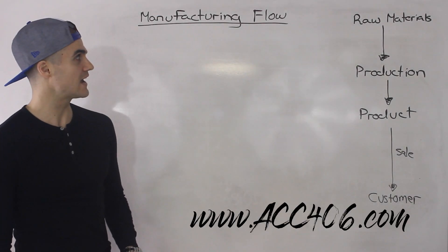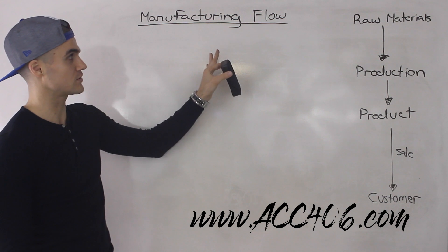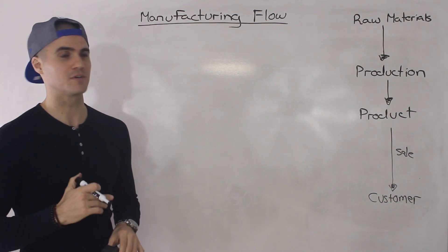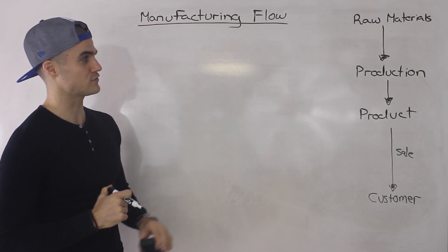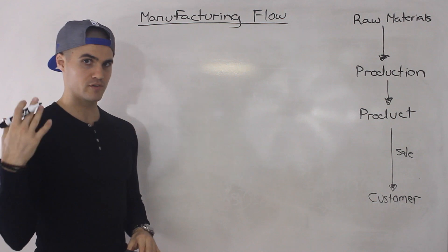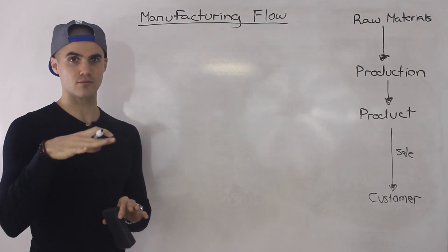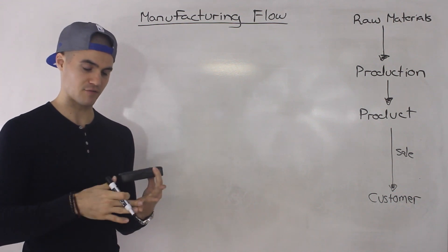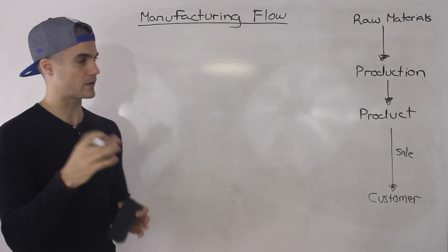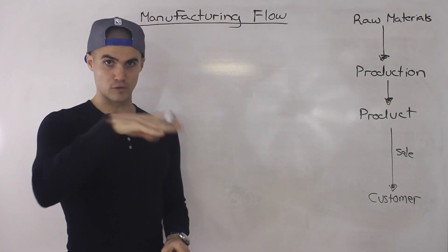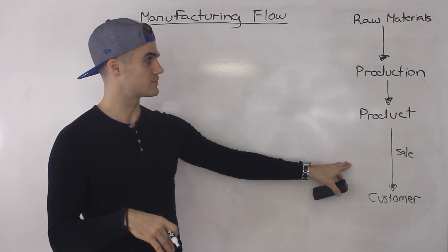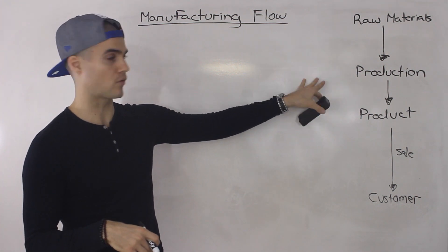Welcome back. Moving on to the next video, we're going to talk about manufacturing flow — basically the flow for a manufacturing company in more detail. Couldn't think of a better name, so just decided to go with manufacturing flow. In a previous video I went over the three common types of companies you'll run into: manufacturing, merchandising, and service. We're going to be talking about the manufacturing company again, going into more detail, and I rewrote the flow chart here.